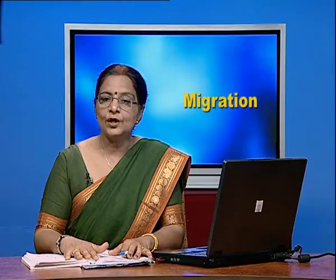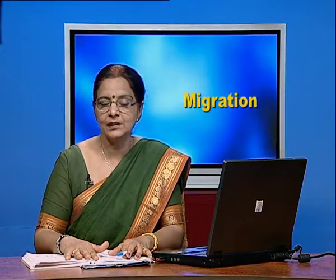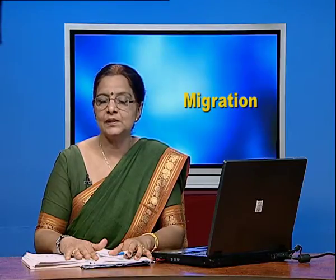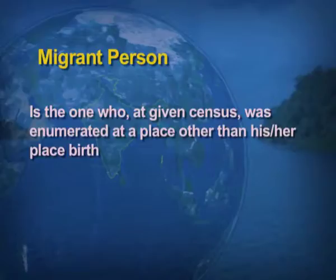When we talk about migration, the person who migrates is known as a migrant person. How do we define the term migrant person? It is the one who, at a given census, was enumerated at a place other than his or her place of birth.